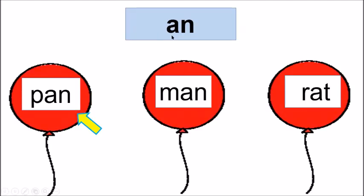In this activity, we have a word family written here. And below, there are three balloons. In each balloon, a word is written. You have to find out which word does not belong to the word family given here. When you find out the word which is odd one out, the balloon having that word will pop. So are you ready to do this activity with me? Okay, so let us start.